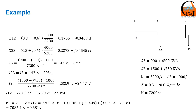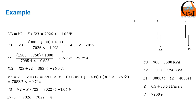Now we do the forward sweep and calculate the voltages of each bus. We have the voltage for the first bus, and we calculate the voltage for the second bus using the KVL formulation: V2 = V1 minus Z12 times I12. We do the same for the third bus using the voltage we just calculated for the second bus: V3 = V2 minus Z23 times I23. We have now reached the end of the feeder and the first iteration is complete.